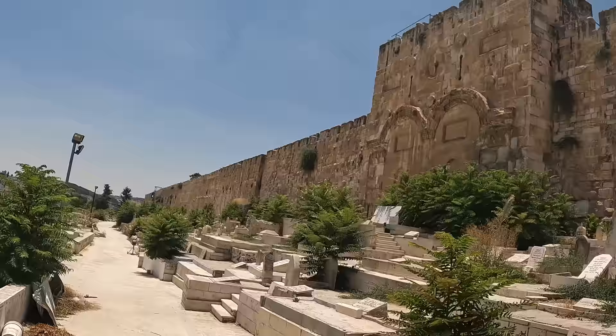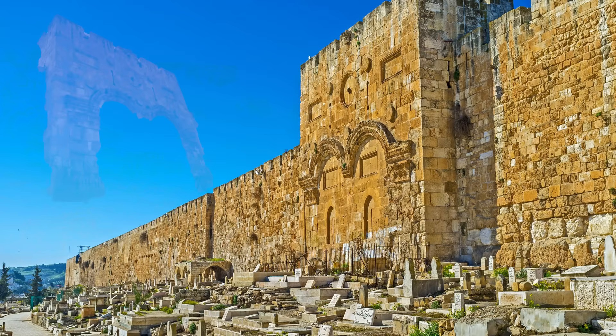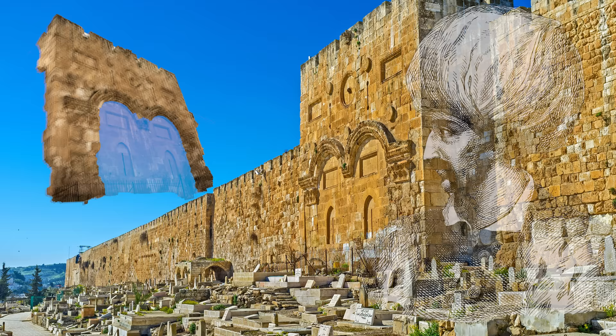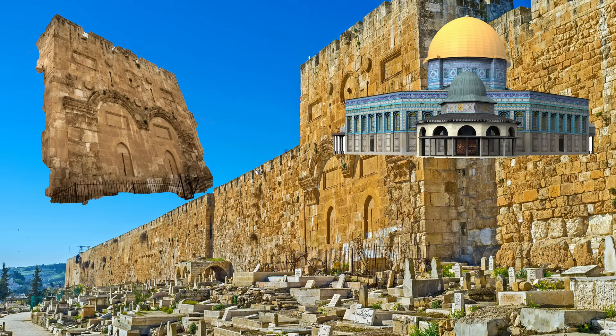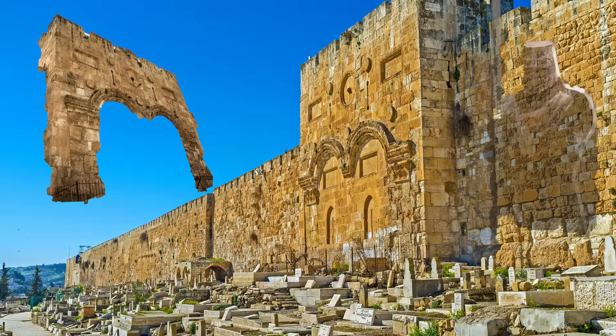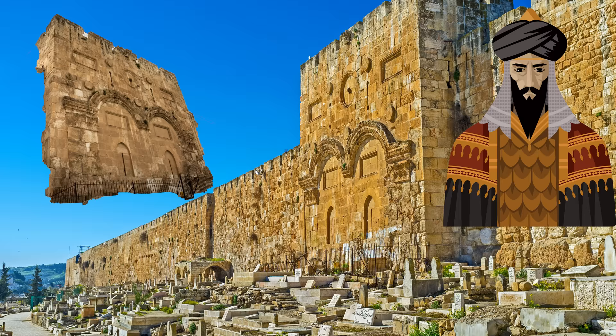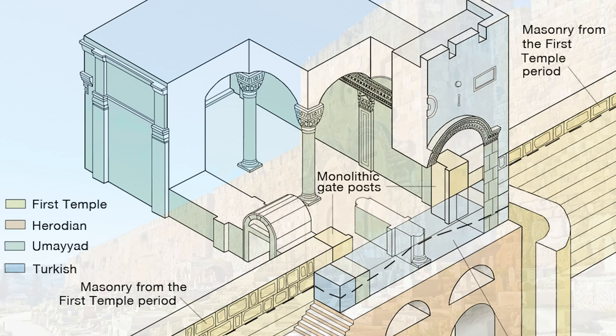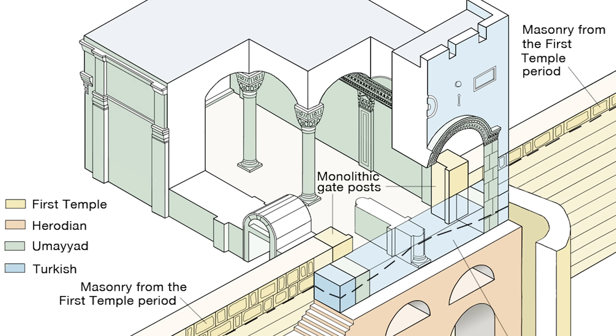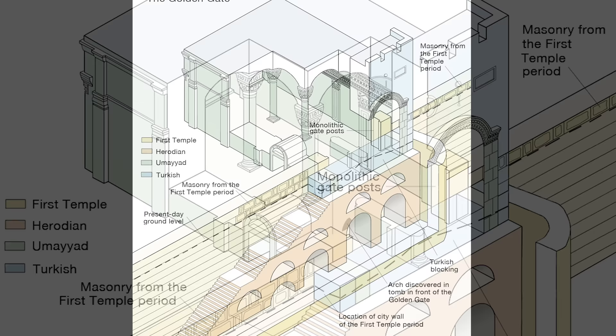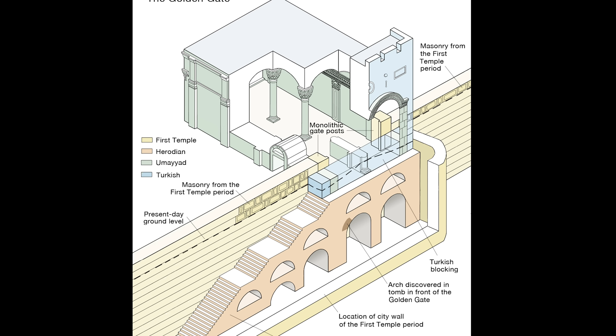Here you can see me walking up to the Golden Gate. Why is this gate sealed and why is there a cemetery in front of it? The eastern gate was ultimately sealed shut in 1541 by the Ottoman Sultan Suleiman. However, prior to this the gate was closed in 810 also by the Muslims, then reopened in 1102 by the Crusaders, and then walled up again by Saladin — the first Sultan of Egypt and Syria and the founder of the Ayyubid dynasty.